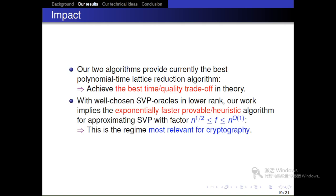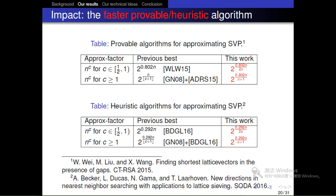I think our work at least has the following impact. Our two algorithms provide currently the best polynomial-time lattice reduction algorithms. They achieve the best time-quality tradeoff in theory. With well-chosen SVP oracles in low rank, our work implies exponentially faster provable heuristic algorithm for approximating SVP with factor n to 1 over 2 less than γ less than n to 1. This is the regime most relevant for cryptography. You can read these two tables for our essential results.